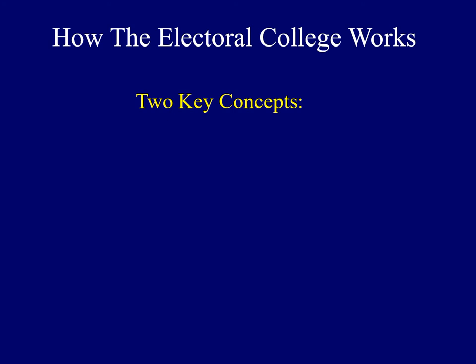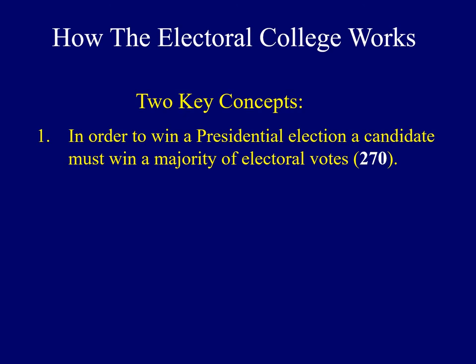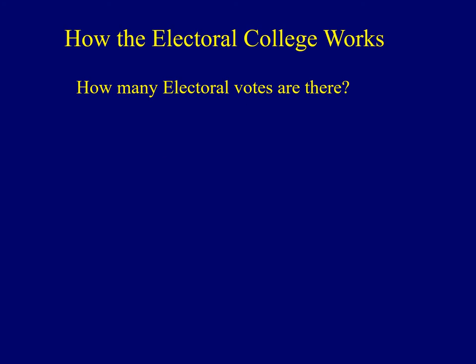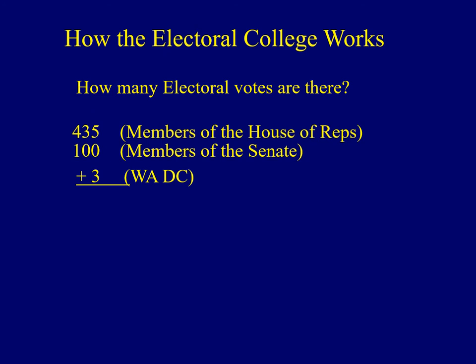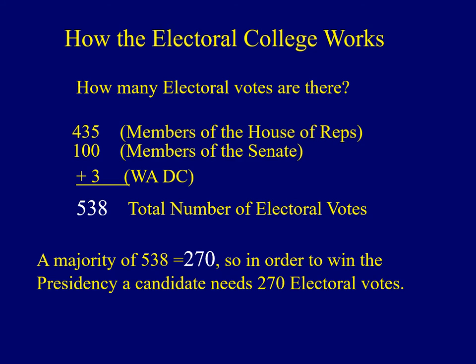There are two key concepts for how the Electoral College works. First, to win a presidential election, a candidate must win a majority of electoral votes — the magic number these days is 270. We start with 435, the number of members of the House of Representatives, then add 100 for the Senate, then add three because Washington D.C. is treated like a state in presidential elections. The total number of electoral votes available is 538, and a majority — over half — is 270.